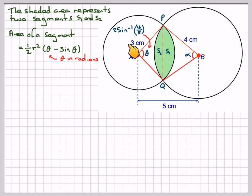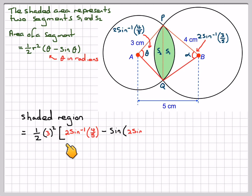This angle here is 2 sine inverse of 4 over 5, and this angle here is 2 sine inverse of 3 over 5. The shaded region will be half of 3 squared times 2 sine inverse of 4 over 5 minus sine of 2 sine inverse of 4 over 5.